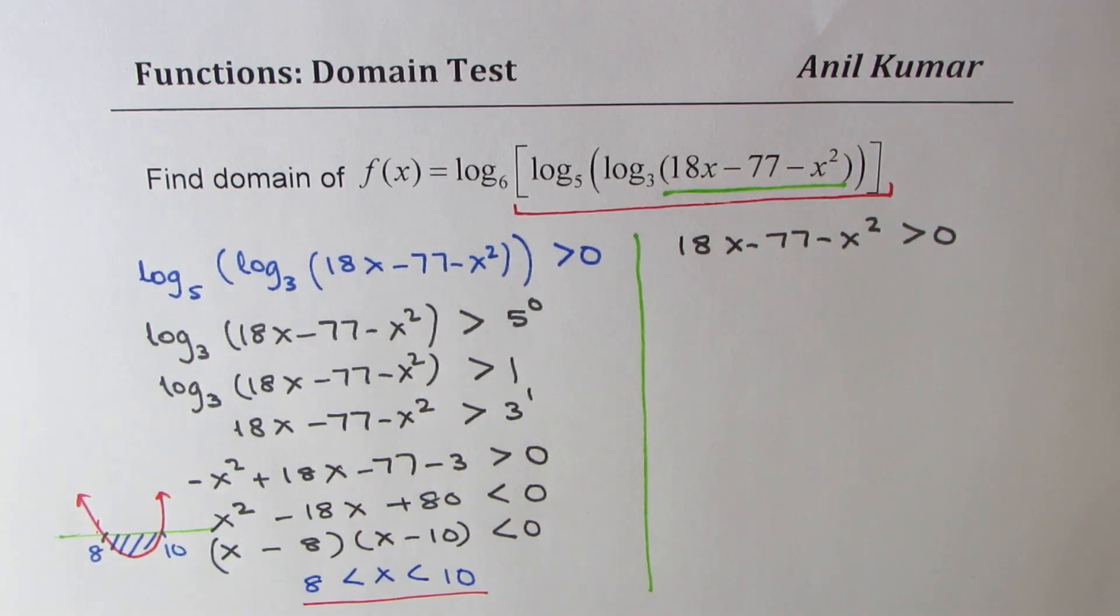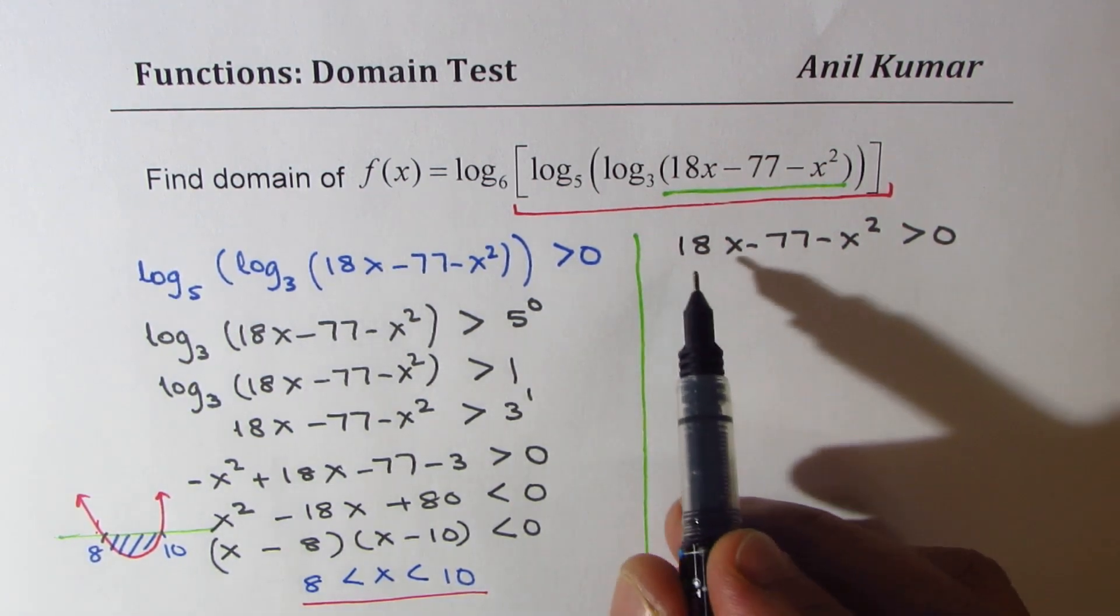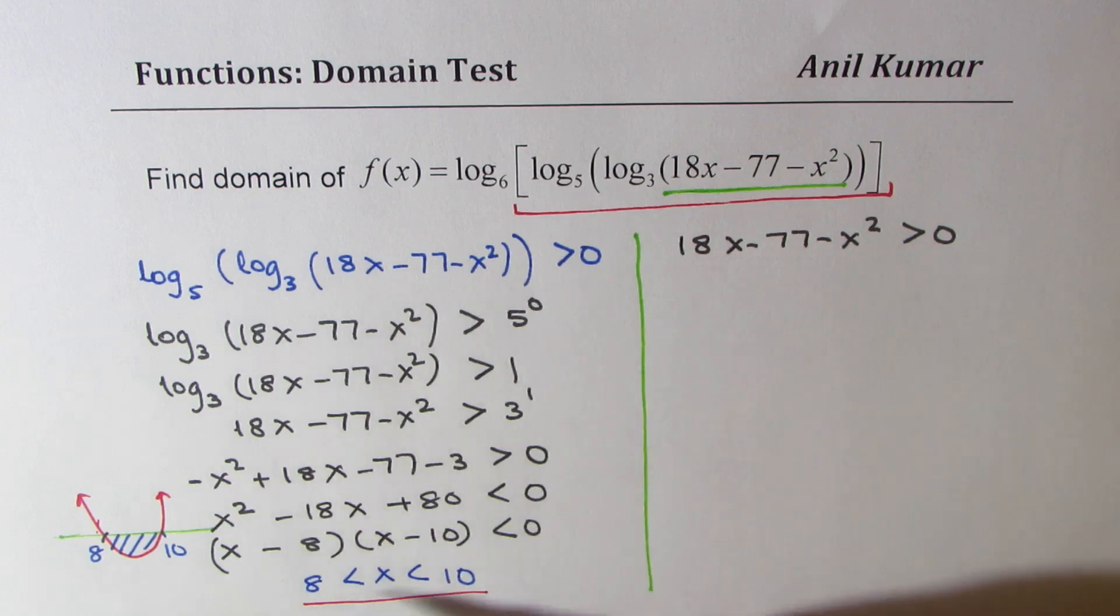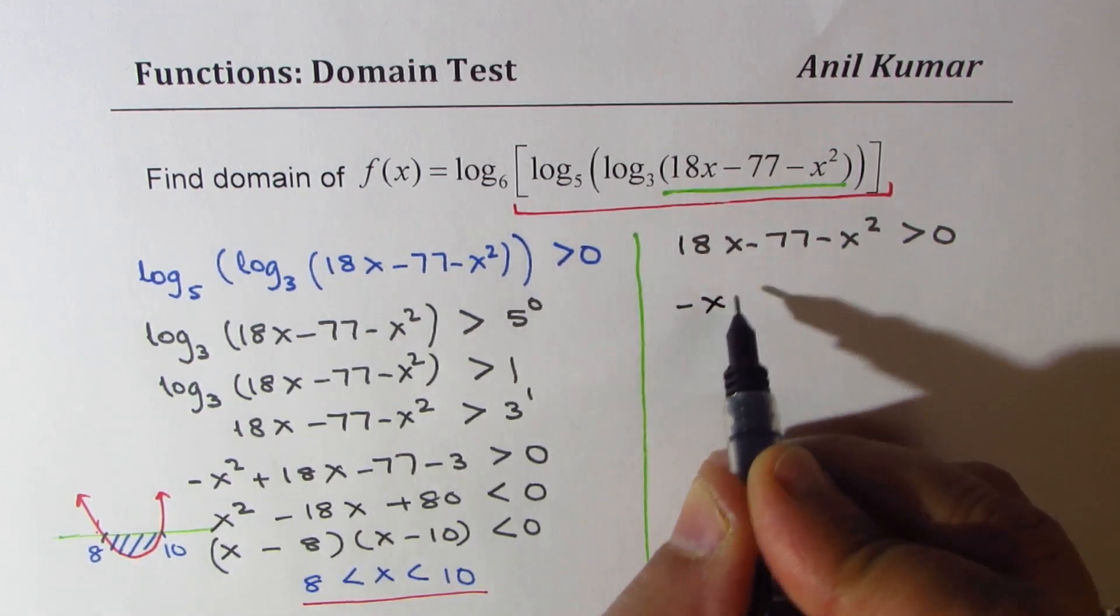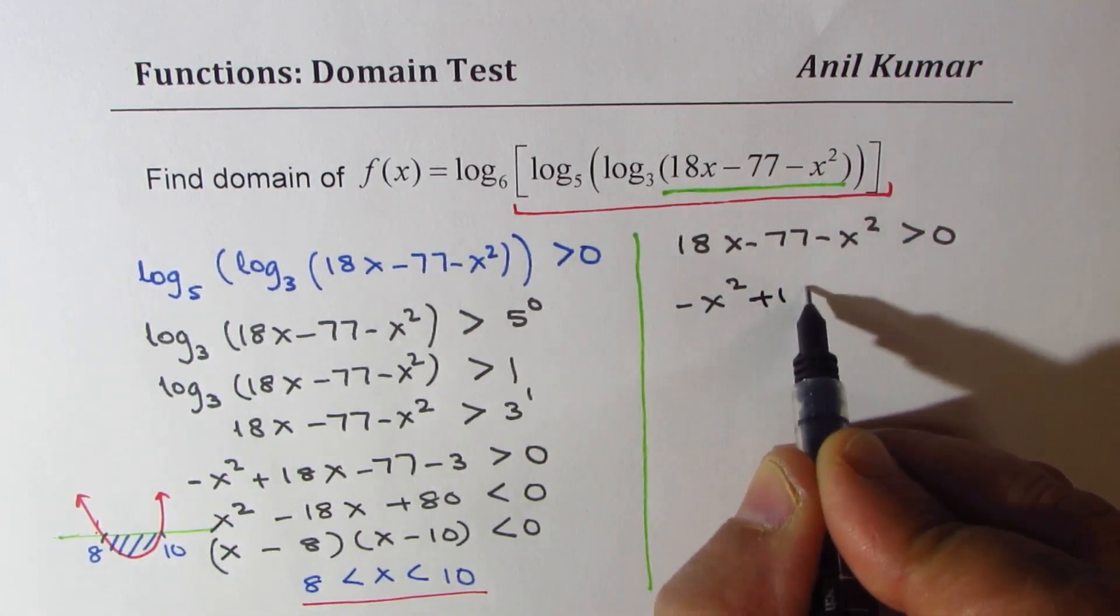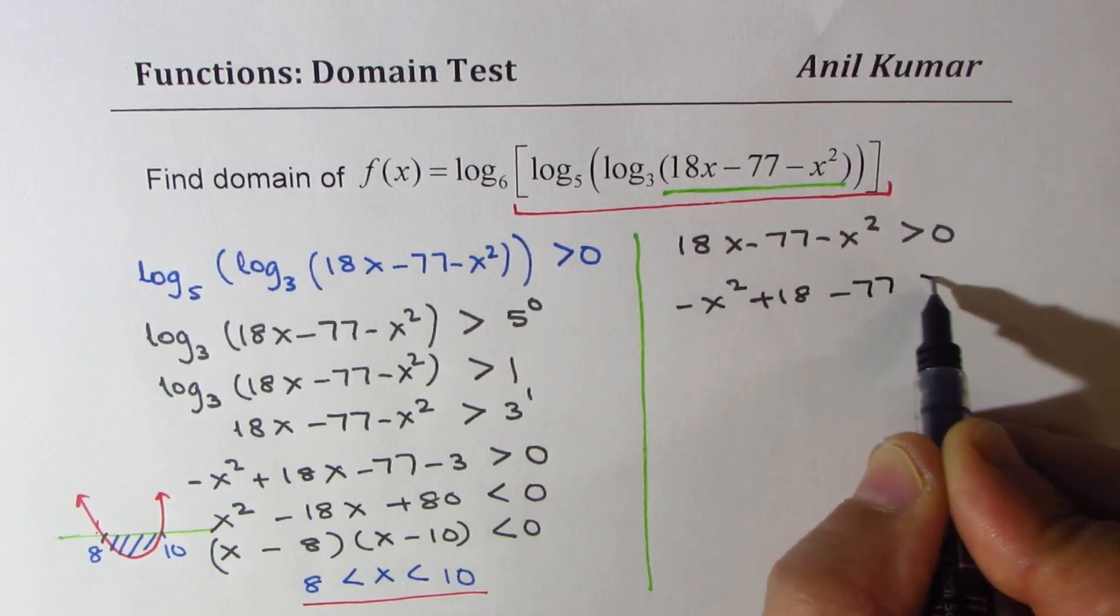Now let's solve the other half. 18 minus this. Let's rearrange as we did here. We get minus x squared plus 18x minus 77 greater than 0.